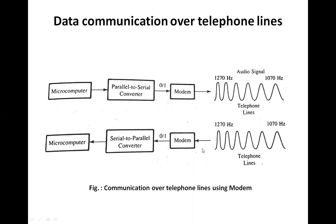Data bits must be converted into audio tones. The device used for this purpose is known as a modem, which stands for modulation-demodulation. It is a circuit that translates digital data into audio tone frequencies for transmission over telephone lines, and also converts audio frequencies back into digital data upon reception.